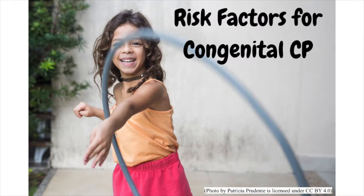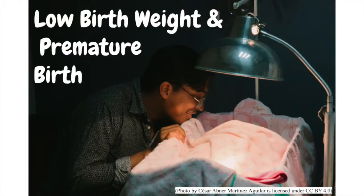Risk factors for congenital CP. Some things increase the chance that a child will have CP — these are called risk factors. It is important to remember that having a risk factor does not mean that a child will have CP. Some of the risk factors for congenital CP are low birth weight. Children who weigh less than five and a half pounds at birth, and especially those who weigh less than three pounds, have a greater chance of having CP. Premature birth — children who were born before the 37th week of pregnancy, especially before the 32nd week, have a greater chance of having CP.